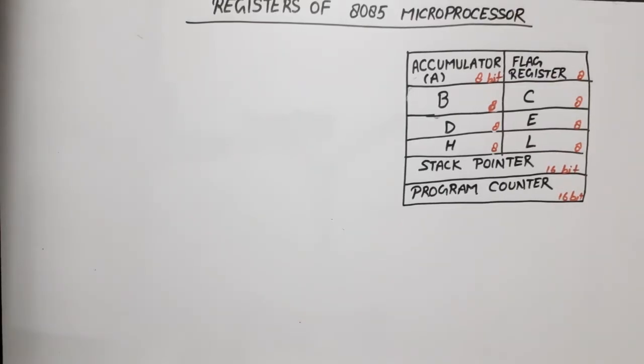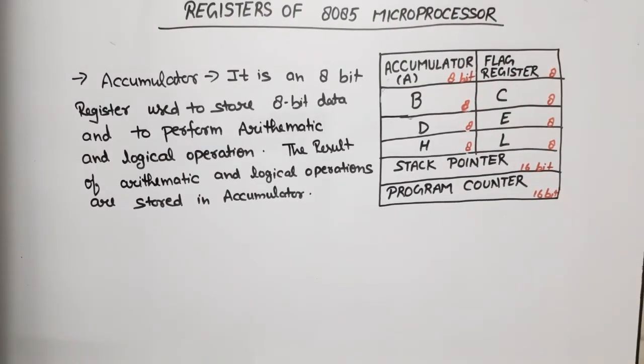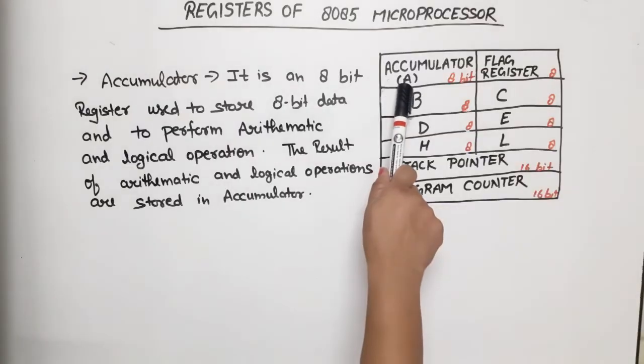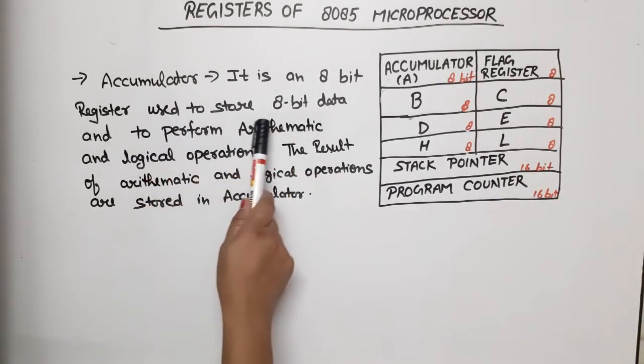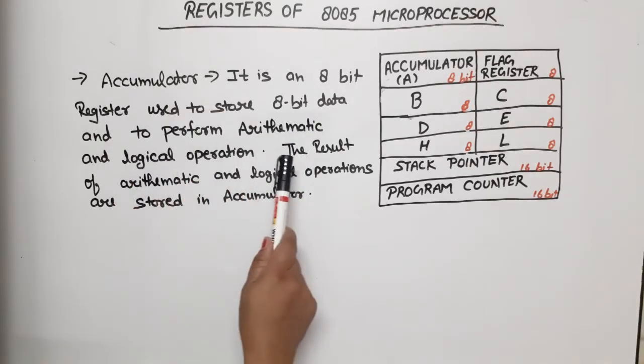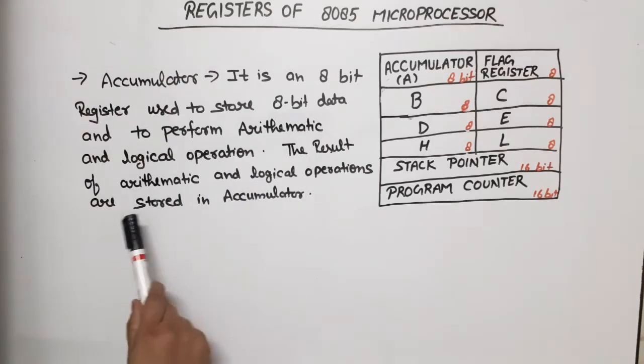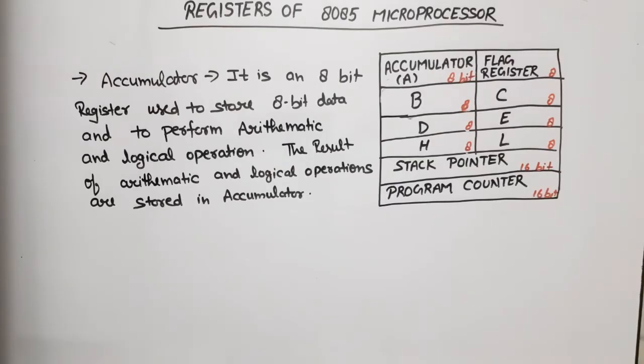Now, how many types of registers are available in 8085? First of all, accumulator. The accumulator is denoted by A and this is an 8-bit register used to store 8-bit data and to perform arithmetic and logical operations. The result of arithmetic and logical operations are stored in the accumulator.